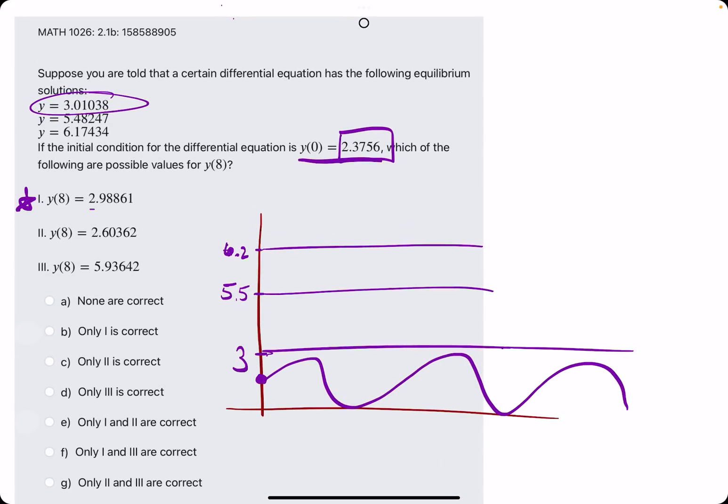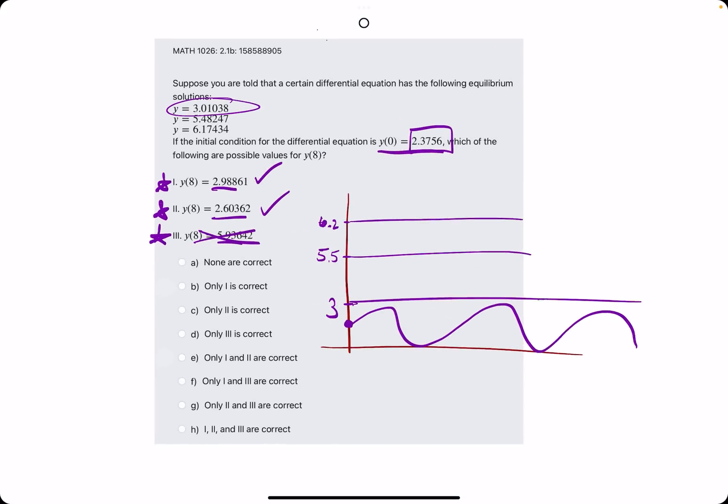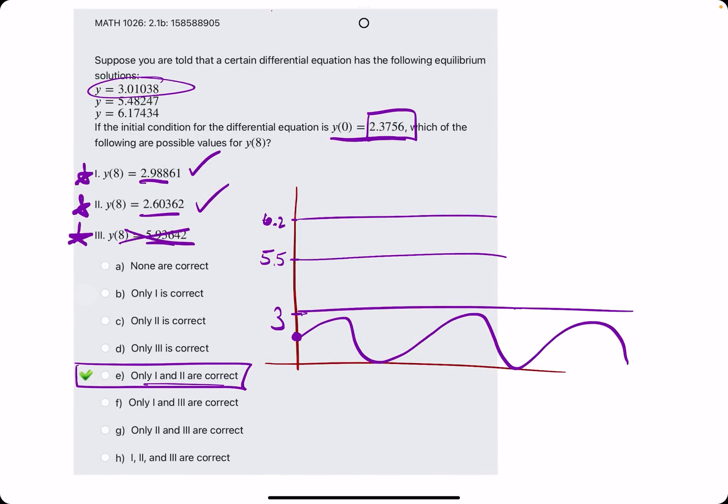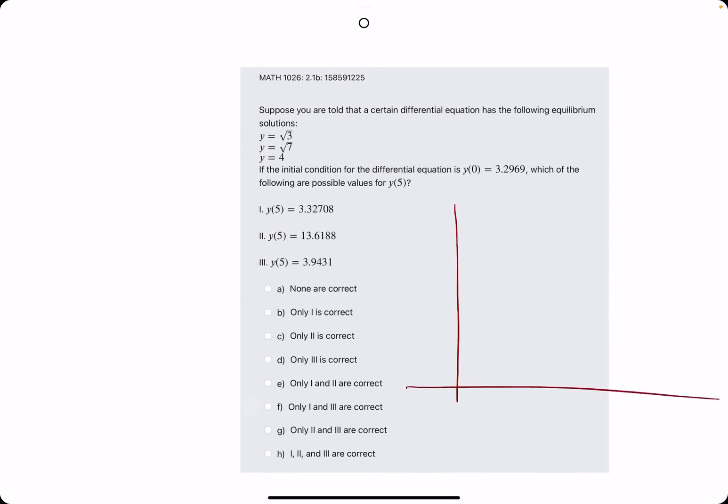Okay, so number 1, 2.98 is less than 3. Number 2, 2.6 less than 3. That works. And number 3, 5.9 is much greater than 3. So it cannot be that one. So we are looking at 1 and 2 to be correct. Break out the eraser to see that e is our answer. Let's go ahead and do one more for practice.